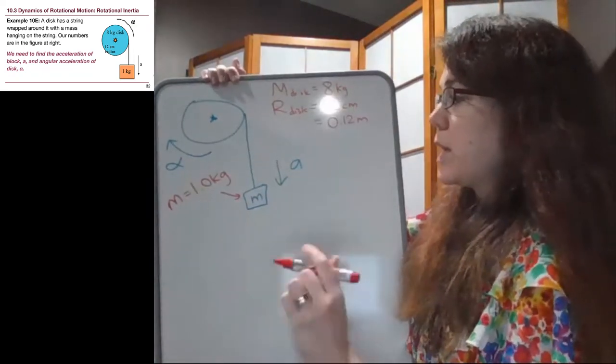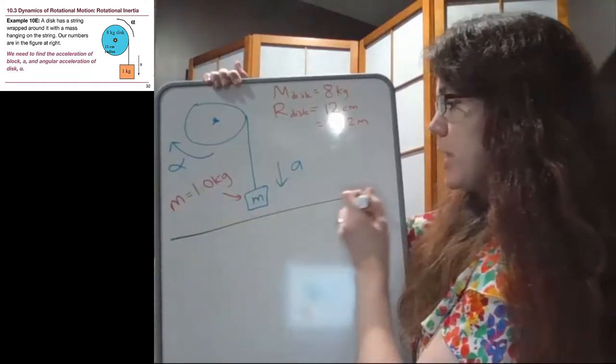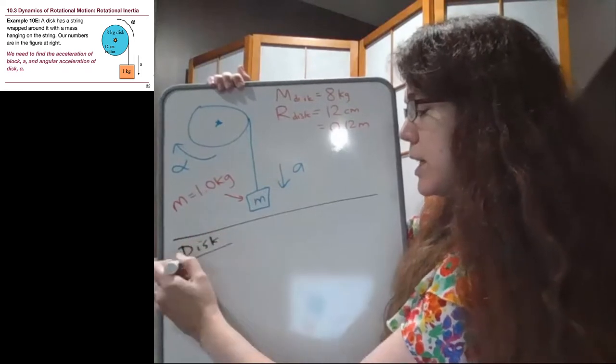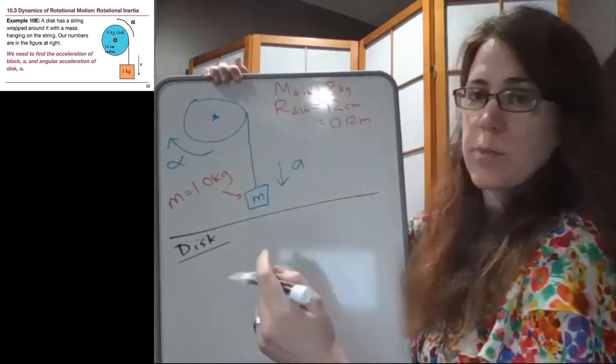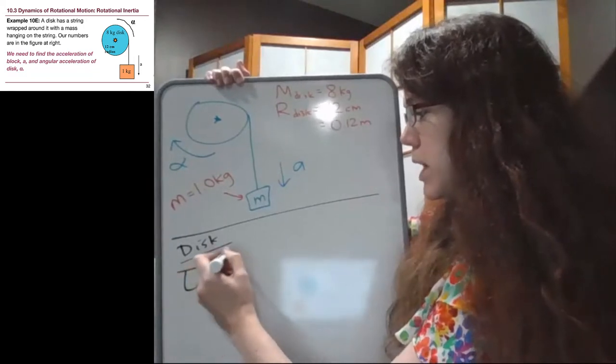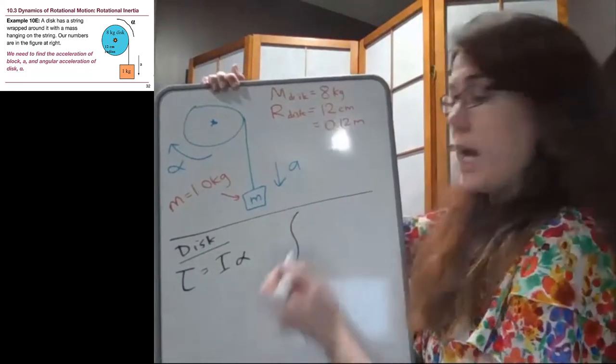So let's think about this as two separate objects. For the disk, the key idea that we need for the disk, because it is rotating, is that torque equals I alpha. And separately for the hanging mass,